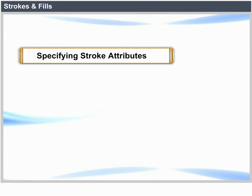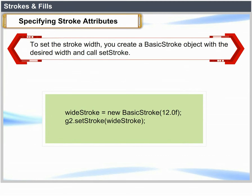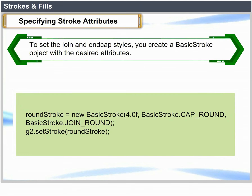Specifying stroke attributes: To set the stroke width, you create a BasicStroke object with the desired width and call setStroke. To set the join and end cap styles, you create a BasicStroke object with the desired attributes: RoundStroke = new BasicStroke(4.0f, BasicStroke.CAP_ROUND, BasicStroke.JOIN_ROUND); g2.setStroke(RoundStroke).